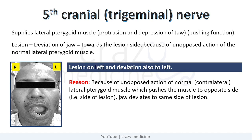And the last is the 5th cranial nerve, that is the trigeminal nerve. It normally supplies the lateral pterygoid muscle, whose normal function is to protrude and depress the jaw — that is, it also has a pushing function. So in case of lesion, there is deviation of jaw towards the side of lesion, because of unopposed action of the normal lateral pterygoid muscle. As you can see in this figure, if the lesion is on the left side, there is deviation of jaw also towards the left. Because of the unopposed action of the normal or contralateral lateral pterygoid muscle, which pushes to the opposite side, the jaw deviates to the same side of the lesion, that is to the left side.